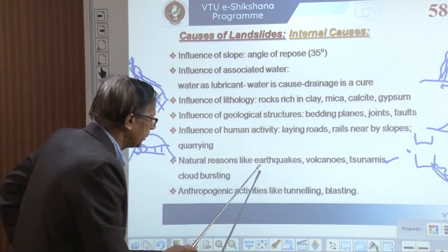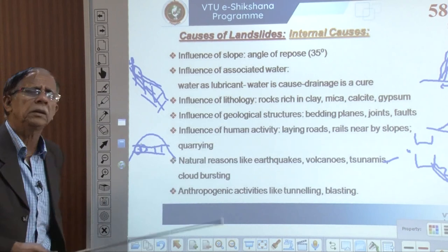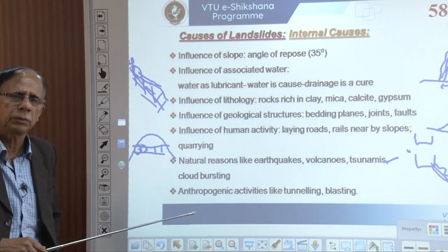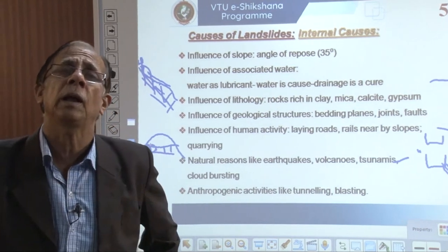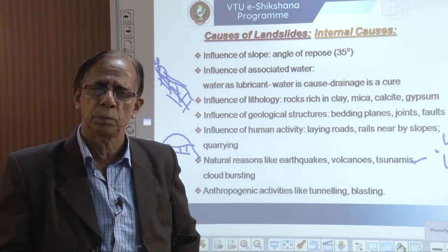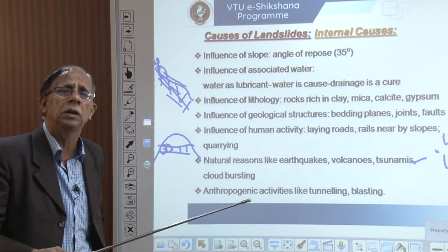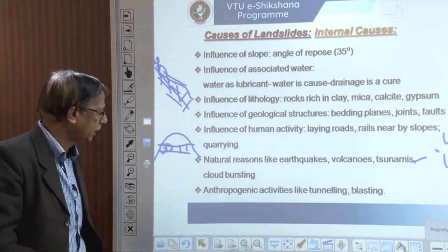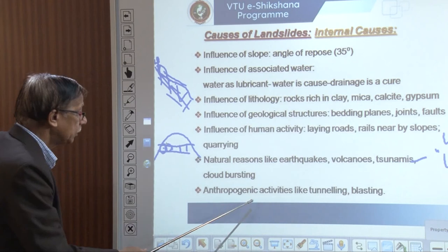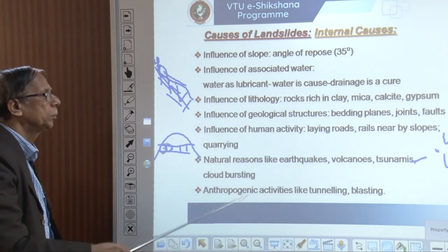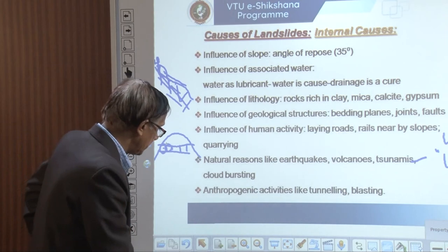Cloud bursting is another cause. In 2009 at Karwar, three days of extremely heavy rain occurred — generally in October along the west coast we do not get rain. Because of cloud bursting and continuous heavy rain for three days — about 24 centimeters — severe landslides were caused there. Anthropogenic activities like tunneling and blasting also create weakness and facilitate and favor landslides.